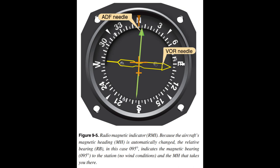Orientation. The ADF needle points to the station, regardless of aircraft heading or position. The RB indicated is the angular relationship between the aircraft heading and the station, measured clockwise from the nose of the aircraft. Think of the nose/tail and left/right needle indications, visualizing the ADF dial in terms of the longitudinal axis of the aircraft. When the needle points to 0 degrees, the nose points directly to the station; with the pointer on 210 degrees, the station is 30 degrees to the left of the tail; with the pointer on 090 degrees, the station is off the right wingtip. The RB alone does not indicate aircraft position — it must be related to aircraft heading to determine direction to or from the station.